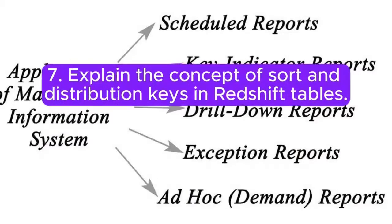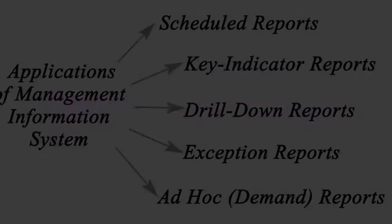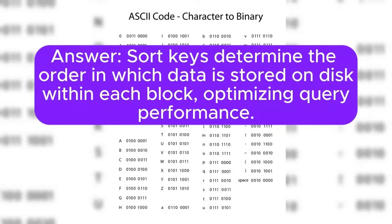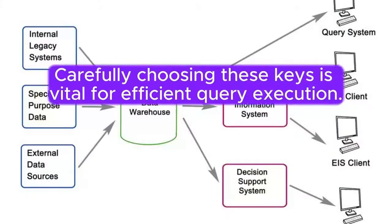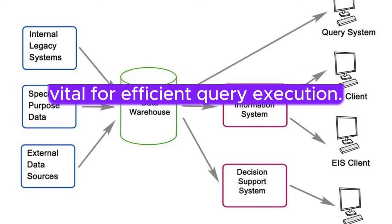Question 7: Explain the concept of sort and distribution keys in Redshift tables. Answer: Sort keys determine the order in which data is stored on disk within each block, optimizing query performance. Distribution keys define how data is distributed across compute nodes. Carefully choosing these keys is vital for efficient query execution.